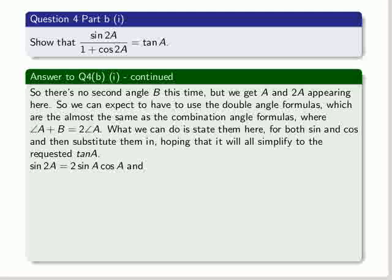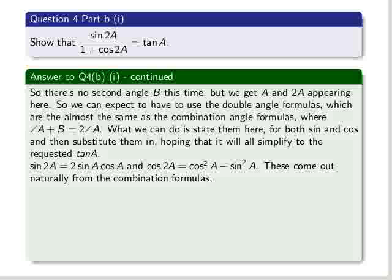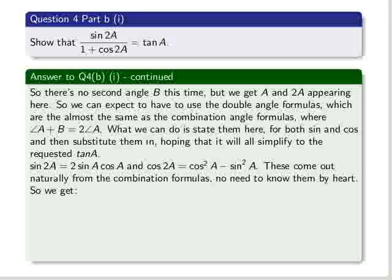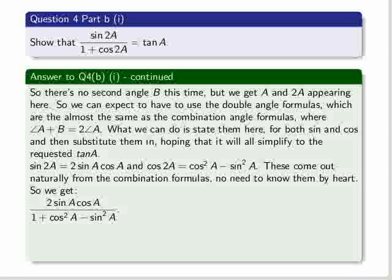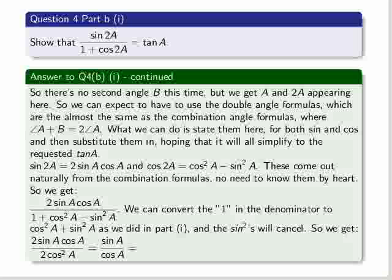So we get sine 2A equals 2 sin A times cos A, and we know that cos 2A equals cos squared A minus sine squared A. So these come out naturally from the combination formulas. There's no need to know them by heart. So we get the 2 of sine A times cos A, all over 1 plus cosine squared A minus sine squared A, is the left-hand expression. And we can convert the 1 in the denominator to cosine squared A plus sine squared A, as we did in part 1, and the sine squareds will cancel. So we get 2 sin A times cos A over 2 cos squared A, and we can cancel the 2 and the cos A there, to get sine A over cos A, which is tan A.